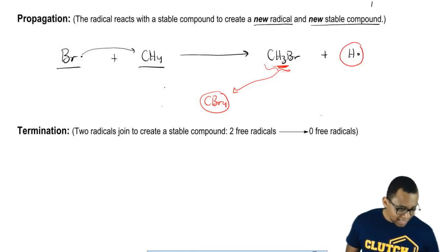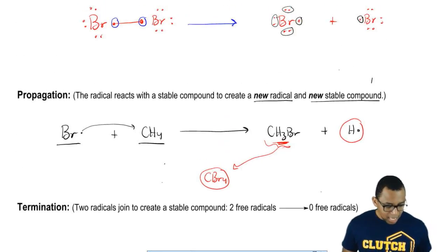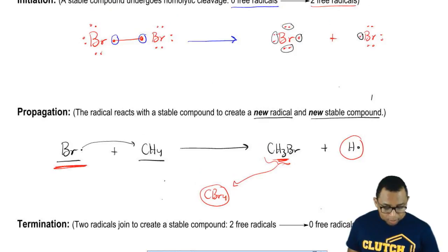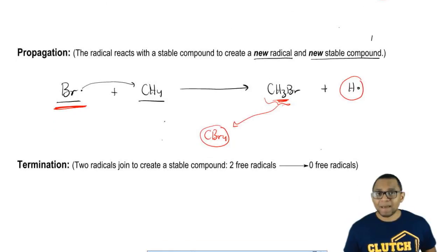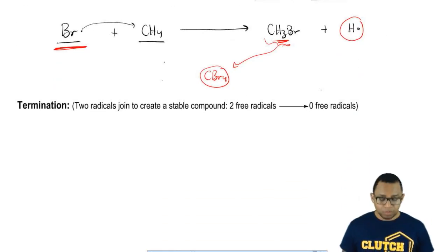This H radical that got ejected and remember, we only use one of these Br radicals. There's still another one floating around. That H radical and that Br radical could somehow find each other and form HBr.